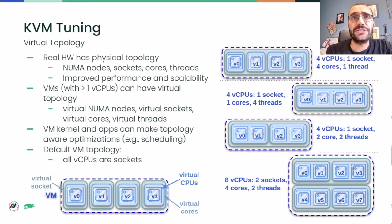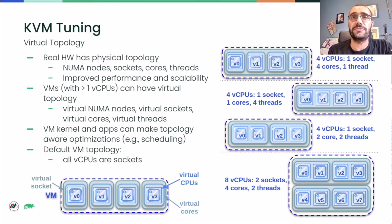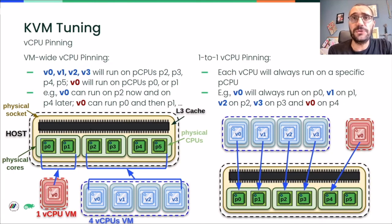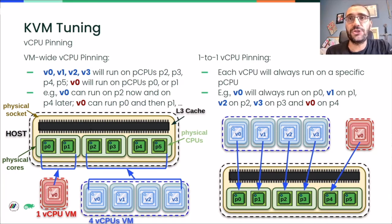If our VM has more than one vCPU, we can define a virtual topology for it, meaning its virtual CPUs can be arranged in virtual cores with virtual threads, virtual sockets, and even virtual NUMA nodes. The software running inside the VM — both the kernel and userspace programs — will see this topology and make assumptions and optimizations based on it. These vCPUs can be pinned to host physical CPUs, meaning the scheduler will only be allowed to move the vCPUs around within certain limits. Using pinning can be very effective for cutting down overhead from CPU migration, achieving more consistent performance, and partitioning host physical CPUs among the various VMs running on the host.